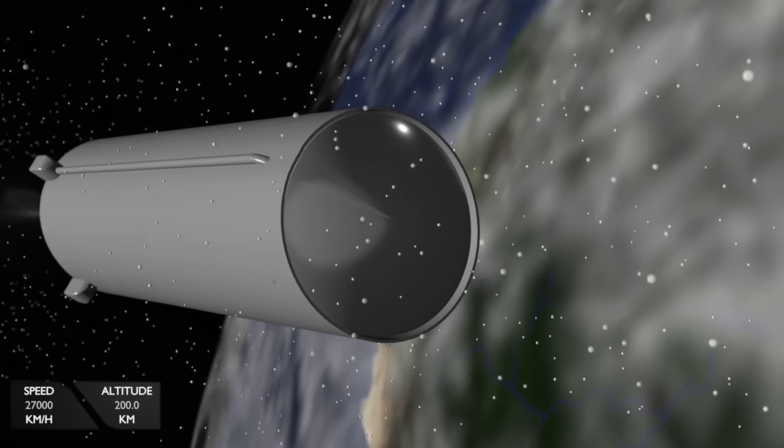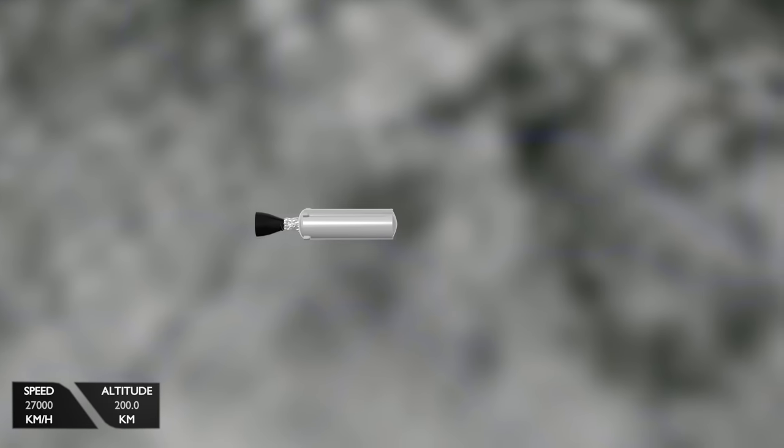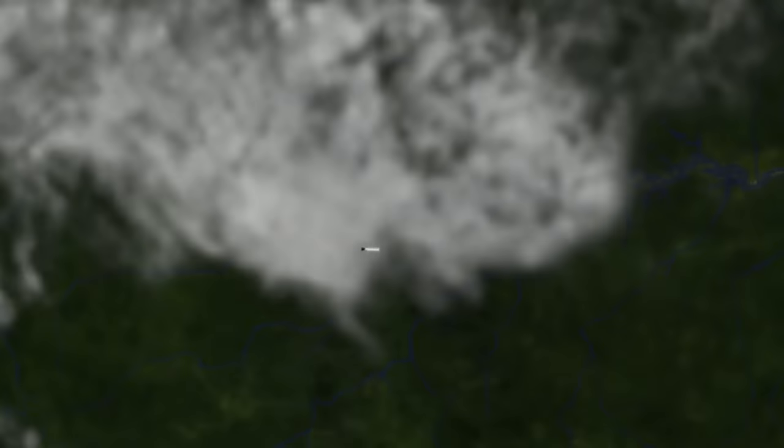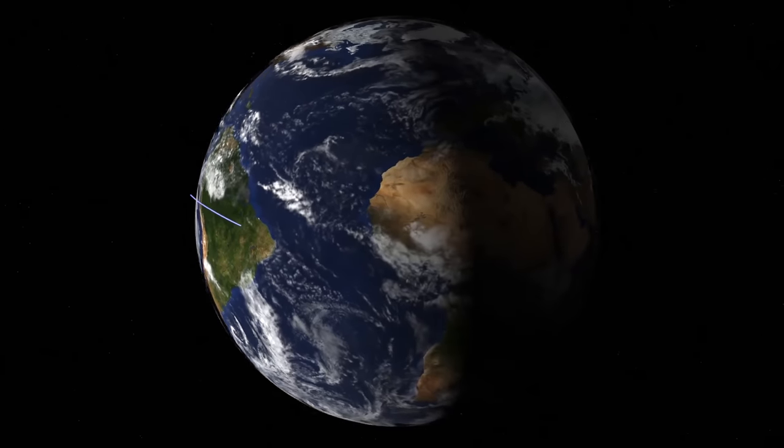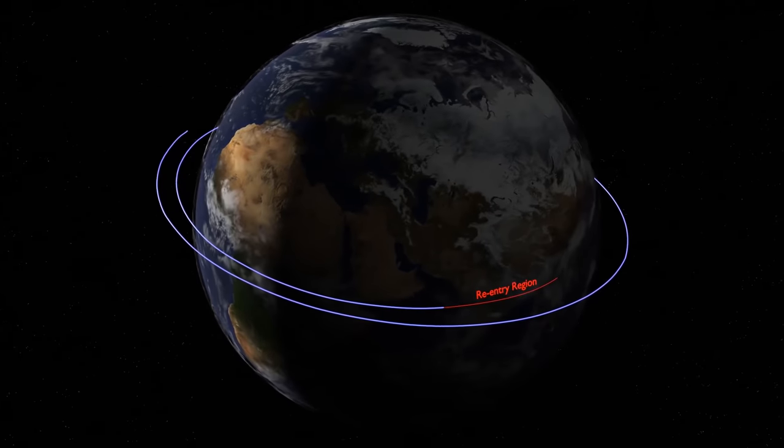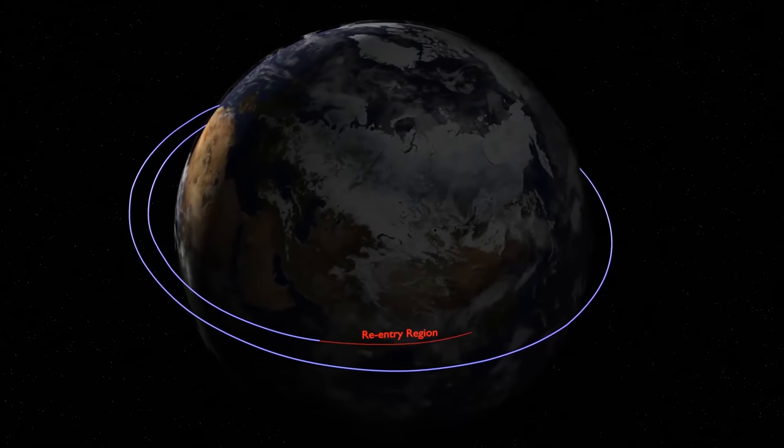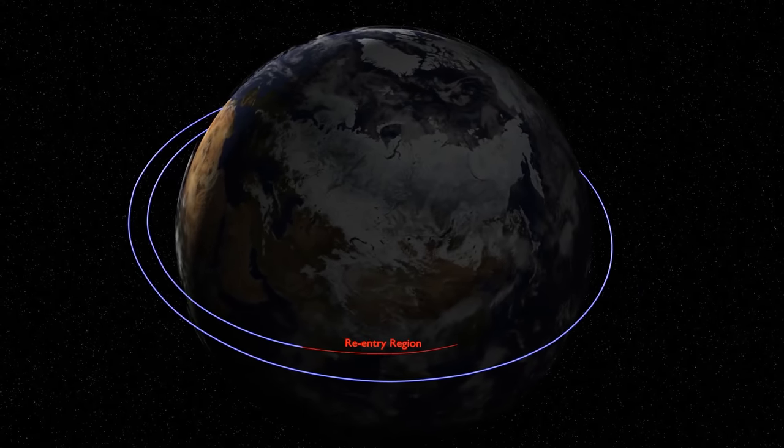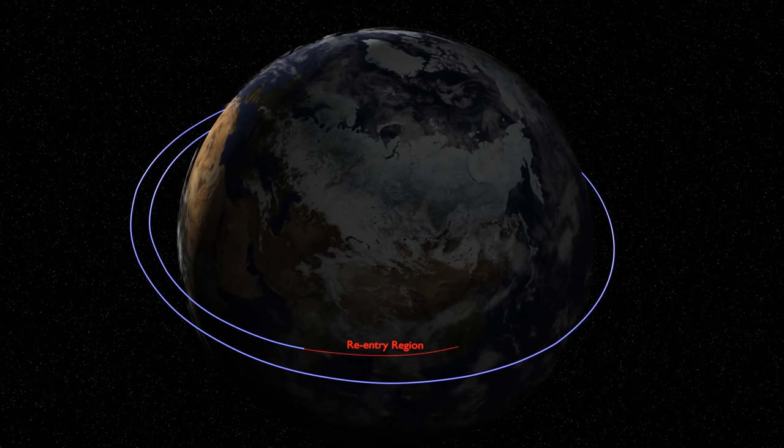Now, the problem with leaving spacecraft in these decaying orbits is this leads to an unpredictable point in time of impact on Earth. As it turns out, it's very difficult to predict the exact lifetime of the orbit when an object will collide with the atmosphere. The reason why it's so difficult to predict the point in time of impact is the other factors that contribute to orbital decay.